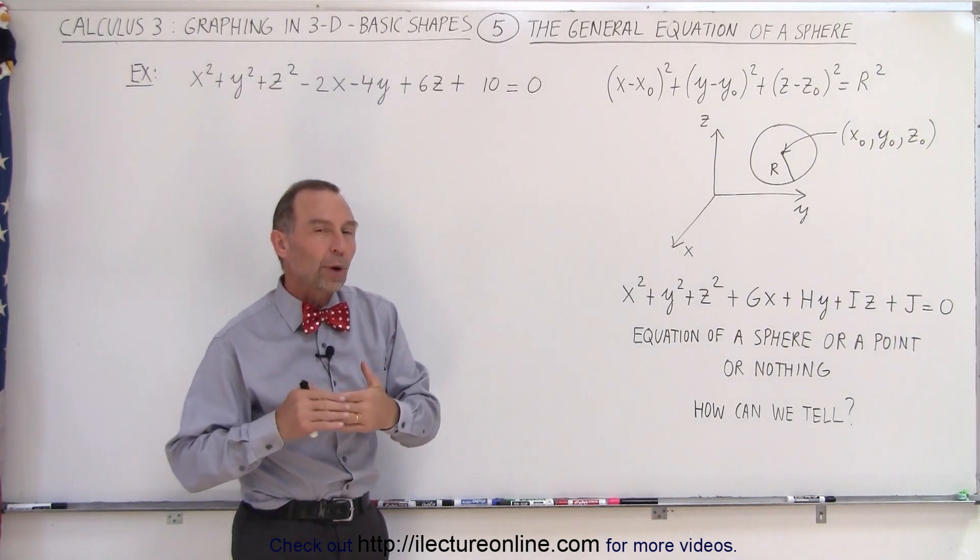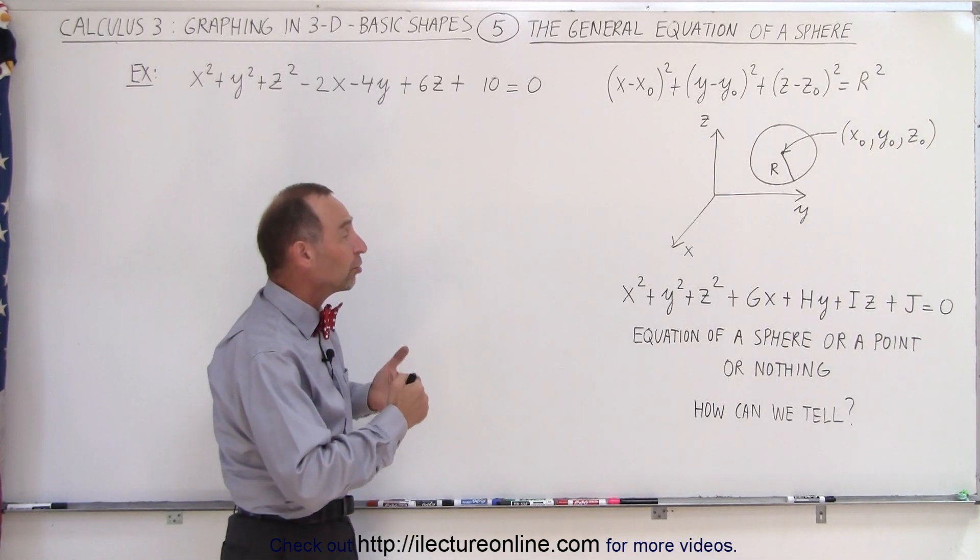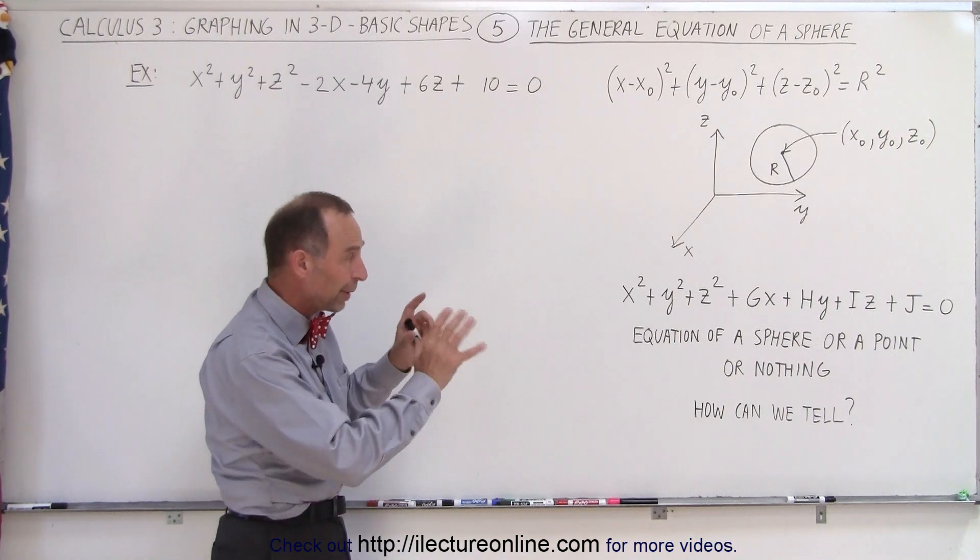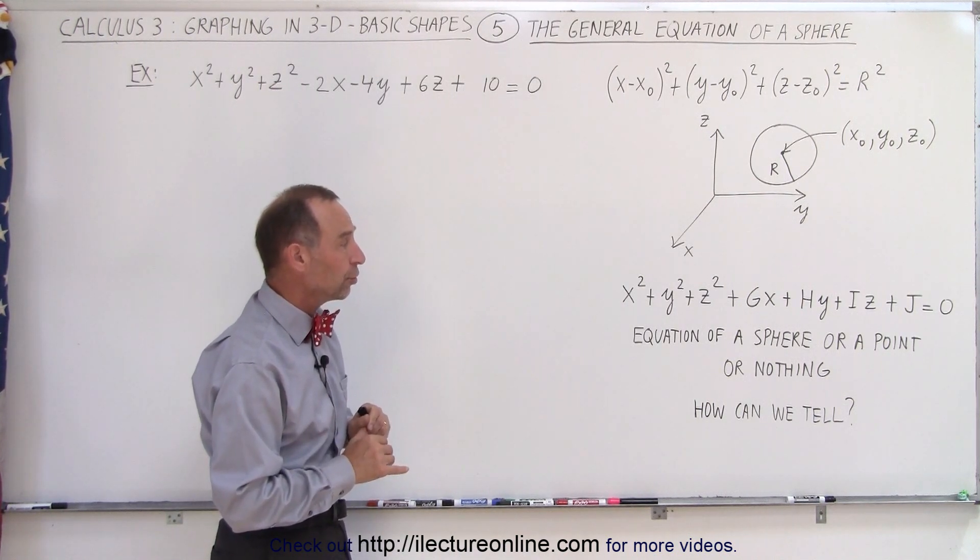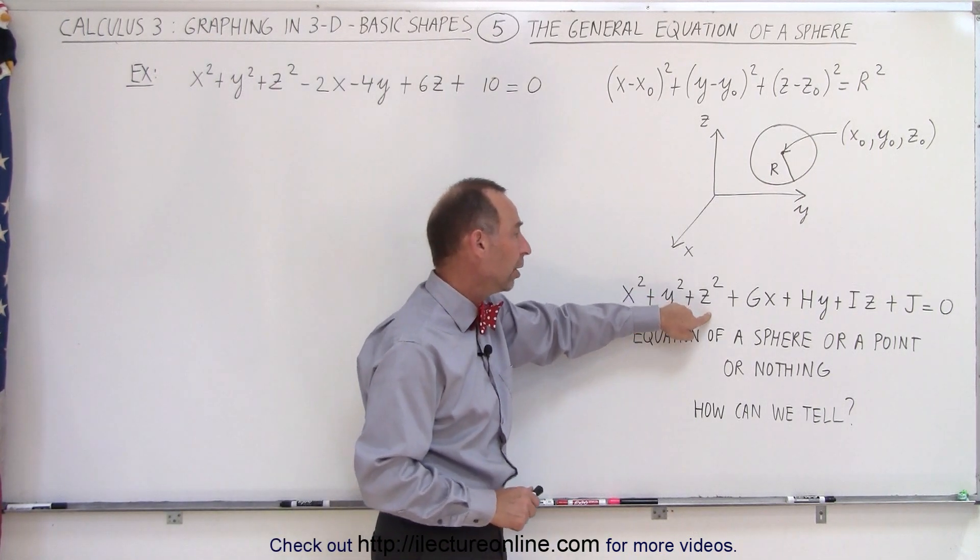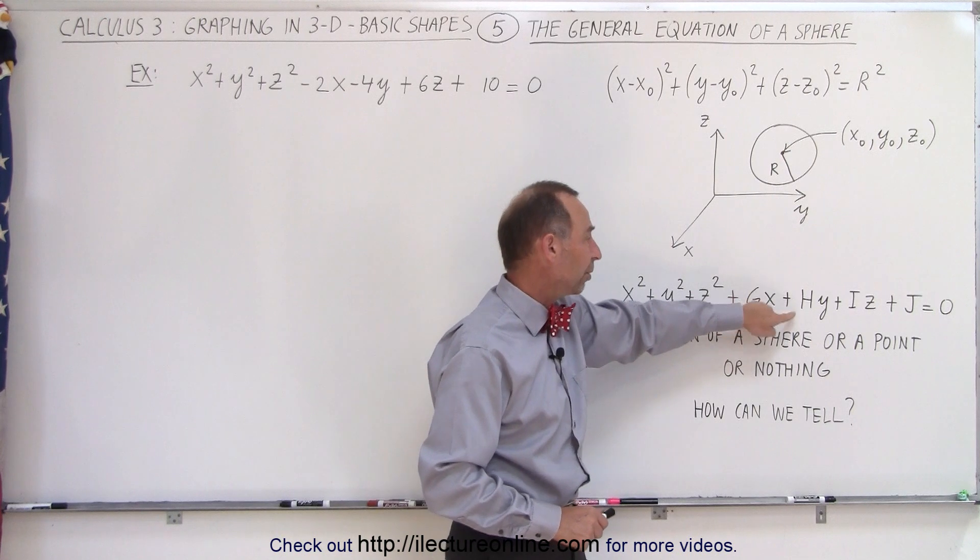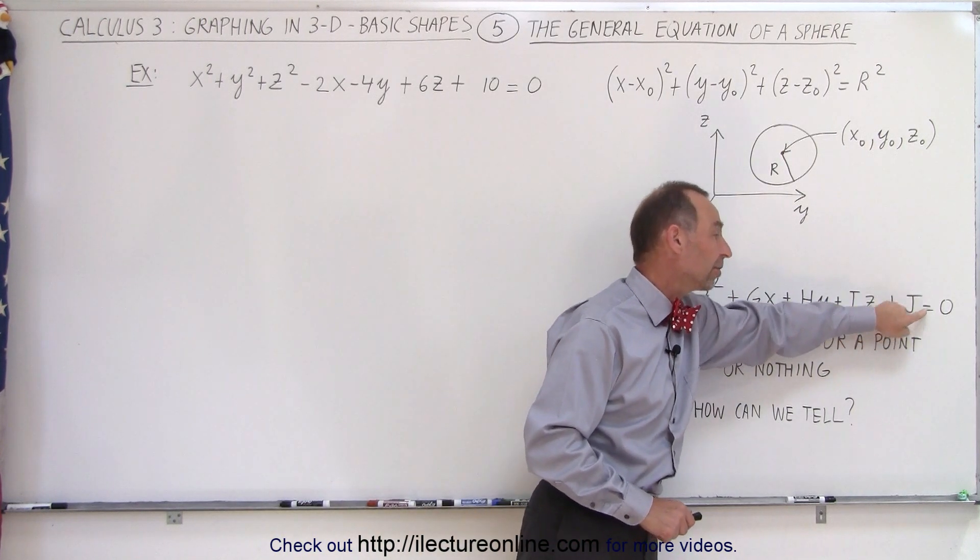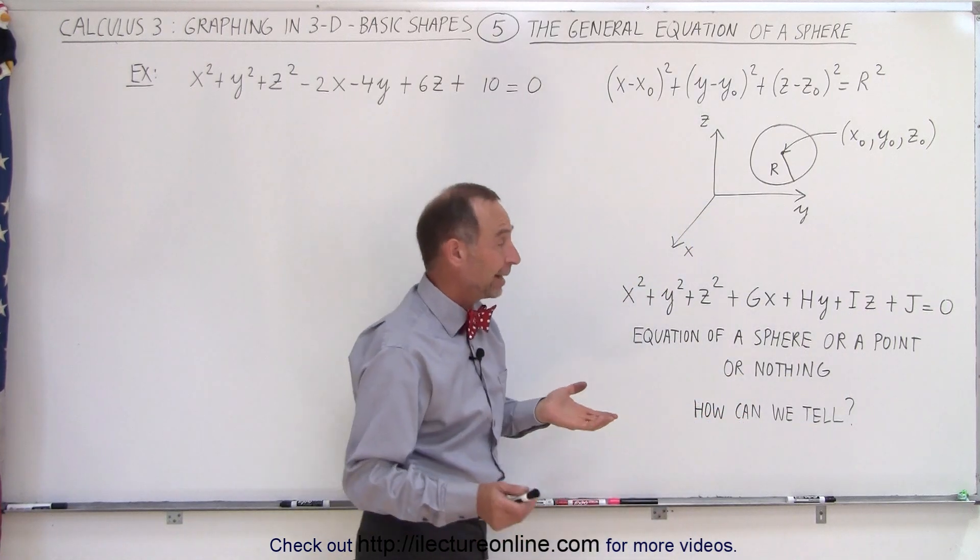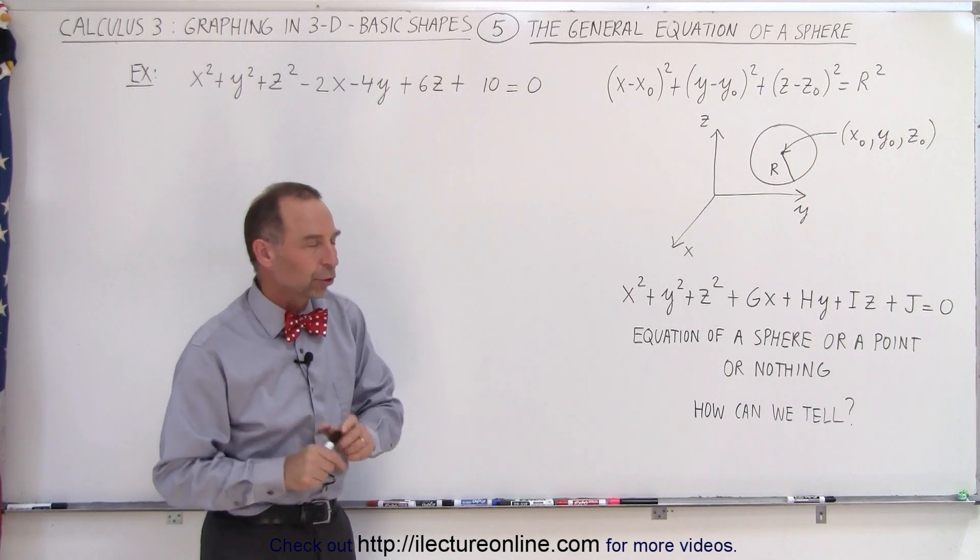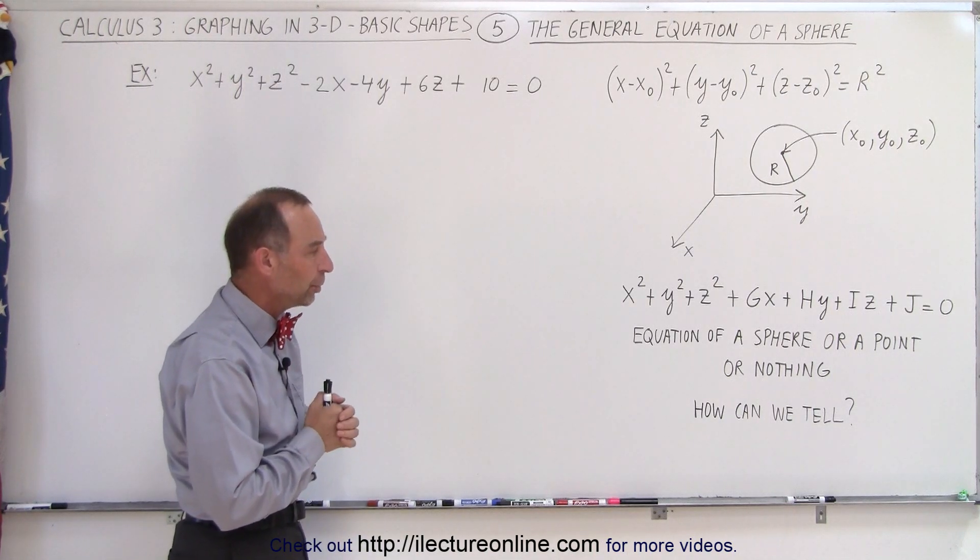But there's another equation, a more general equation, that describes a sphere. Or at least it could describe a sphere depending upon the values of the constants used. Now here's the equation. It's x squared plus y squared plus z squared plus some constant times x plus some constant times y plus some constant times z plus another constant equals zero. Now you may ask yourself the question, how do you know that that's the equation of a sphere? Well we're going to show you with an example in just a moment.